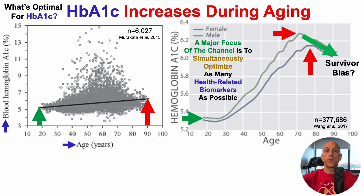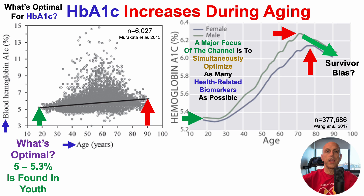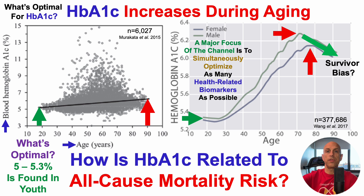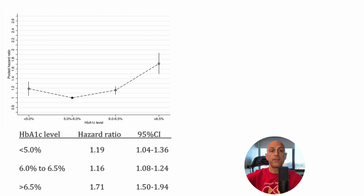So from these two studies, we can see that HbA1c increases during aging. In terms of the what's optimal question, we know that 5 to 5.3% is found in youth. But what about all-cause mortality risk? How is HbA1c related to all-cause mortality risk? That's what we'll see next.